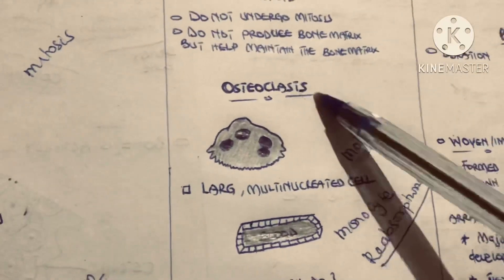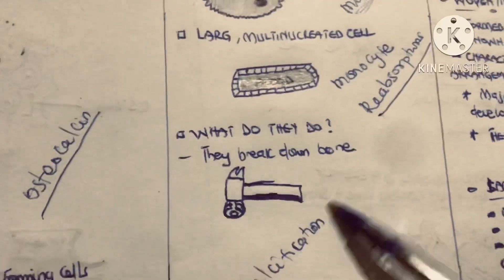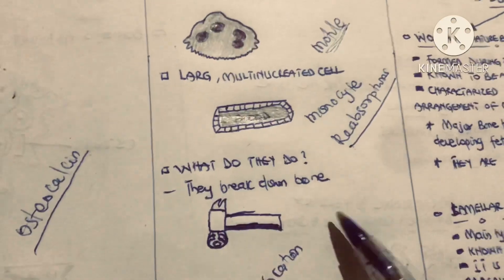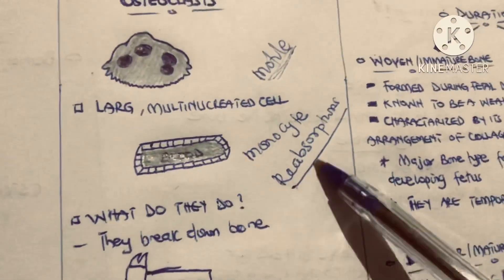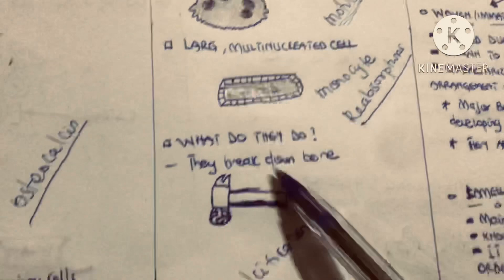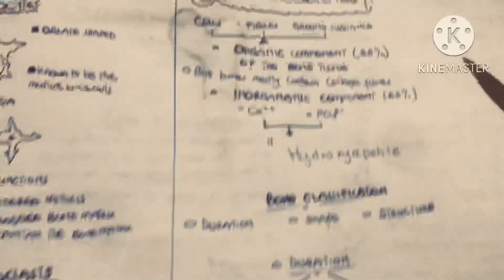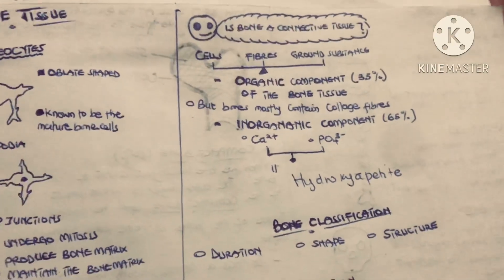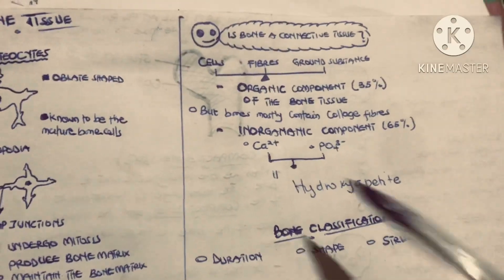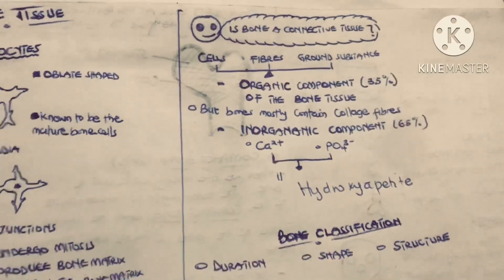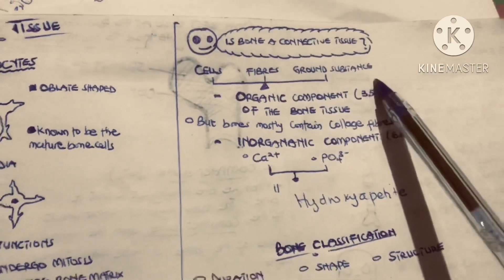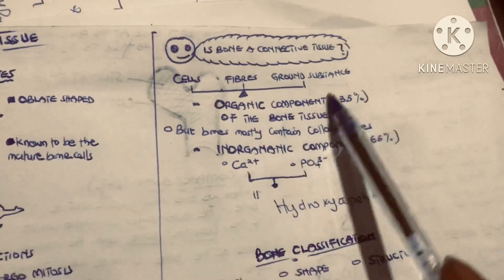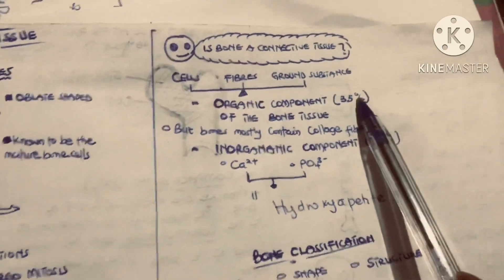Osteoclasts contain enzymes that help them break down bones. The breaking down of bone is what we call resorption — so when you hear resorption, it means the breakdown of bones. Now, is bone a connective tissue? Yes, bone is a connective tissue. That means it contains cells, fibers, and ground substances. These cells, fibers, and ground substances form the organic components of the bone tissue.